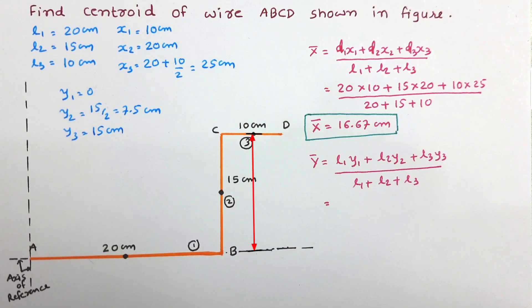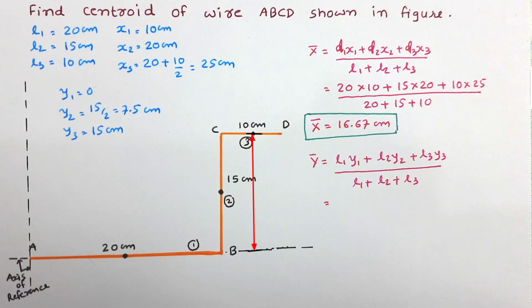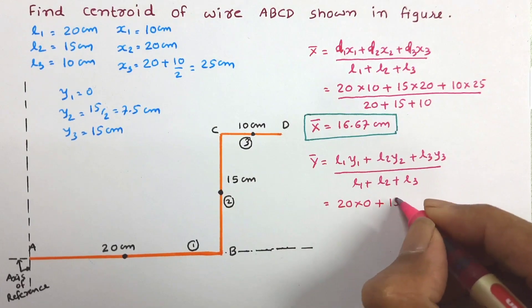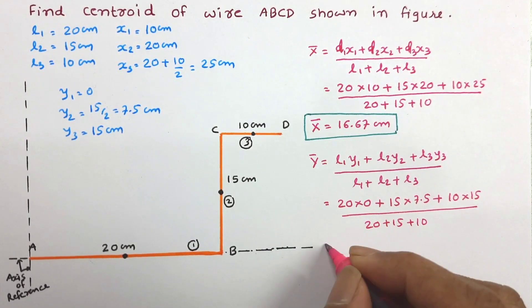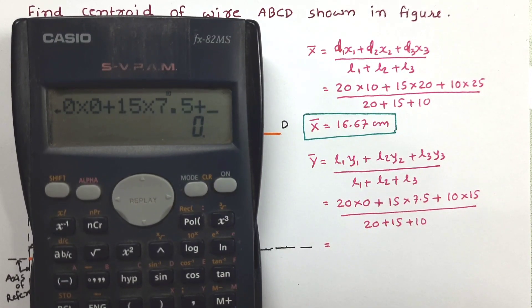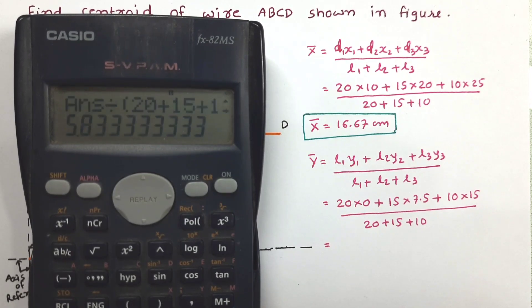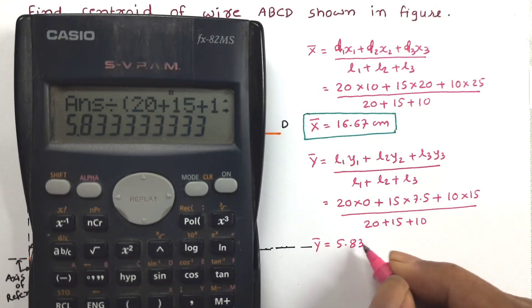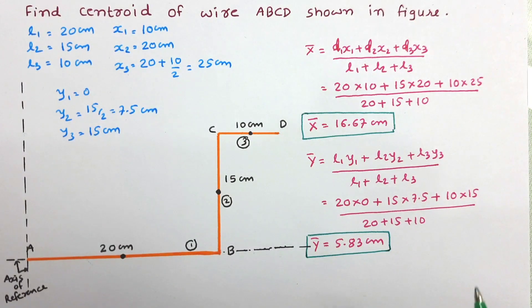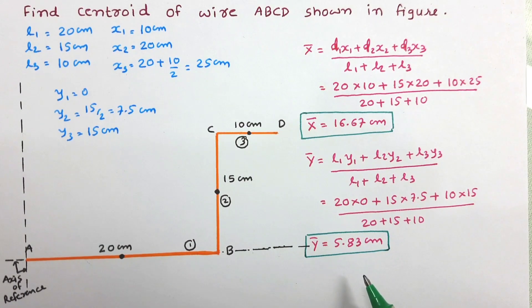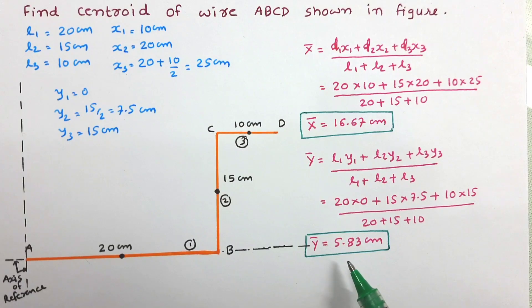Now let us put all these values in the equation of ȳ. After the calculation, value of ȳ has been obtained as 5.83 cm.